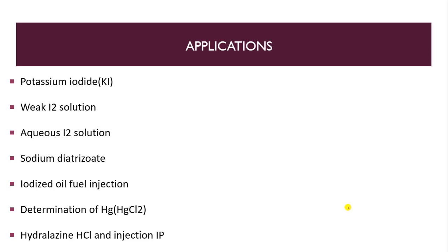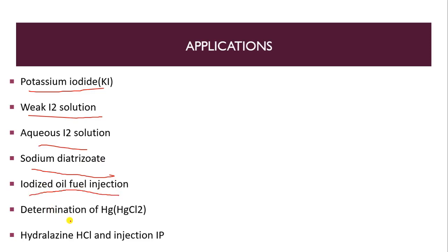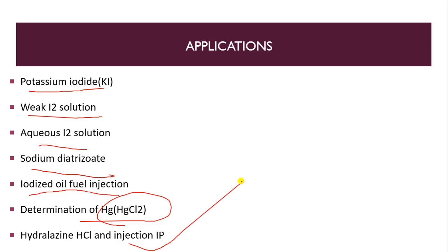Applications of iodatometric methods include determination of potassium iodide, aqueous I₂ solution, sodium dithionite, iodized oil for injection, HgCl₂, and hydralazine HCl injection IV. This concludes the discussion on the different types of redox titrations. Thank you dear learners for watching the video.